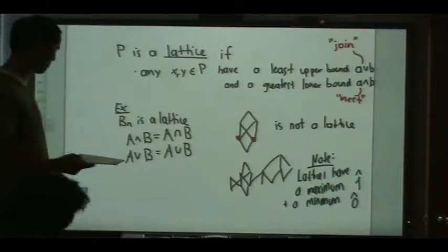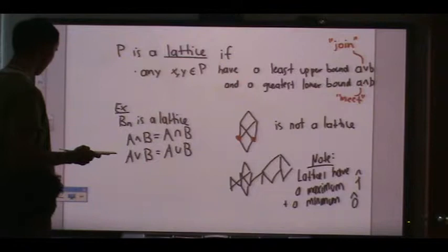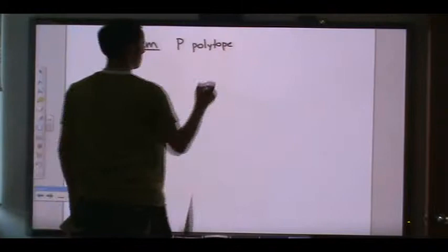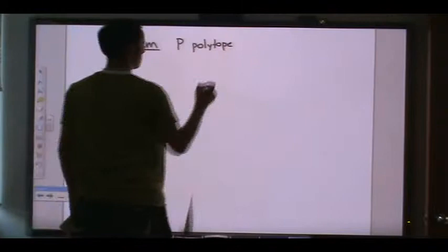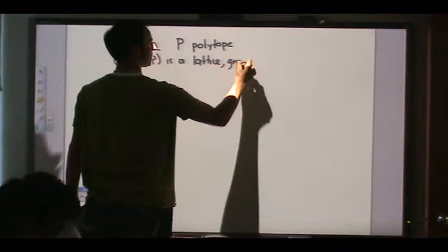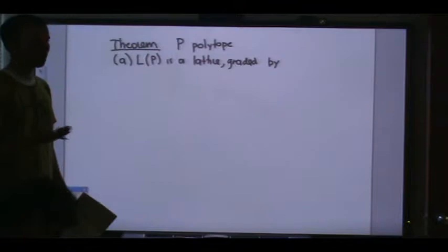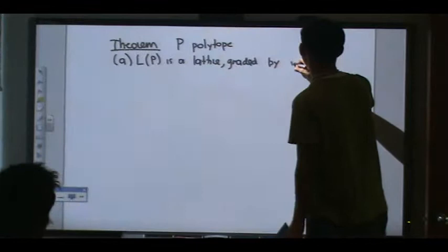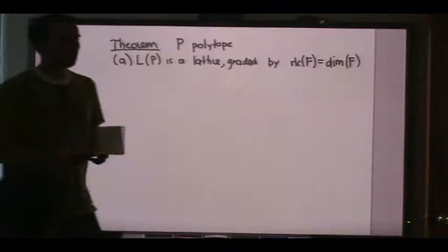Now you can guess what I'm about to prove — all these preludes point to the following important theorem. And now it's clear why I call the face poset L and not F — because it's a lattice. Theorem: if you have a polytope p, then L(P) is a graded lattice. The grading makes sense: the levels of the faces are their dimensions. The rank of a face is its dimension plus one, since the empty face has dimension −1 and we want rank starting at zero.